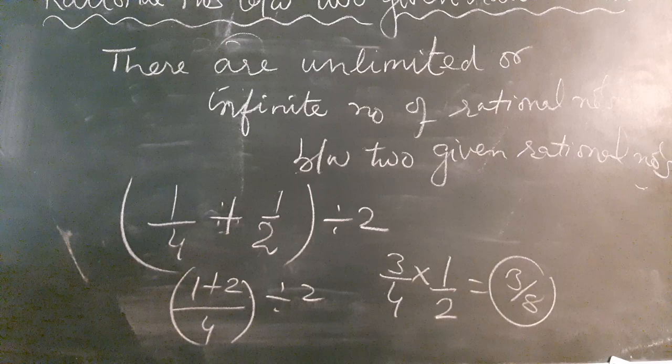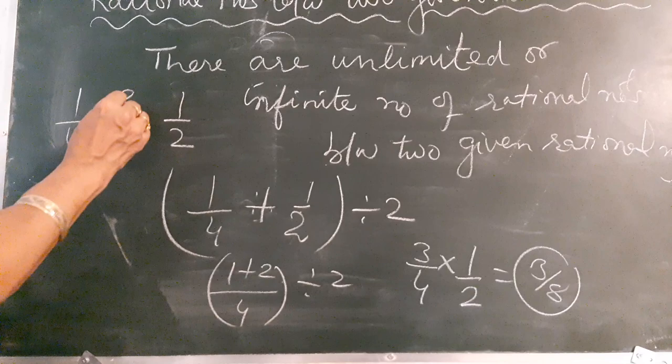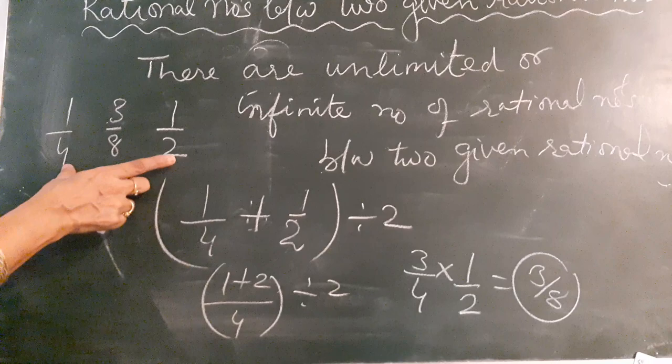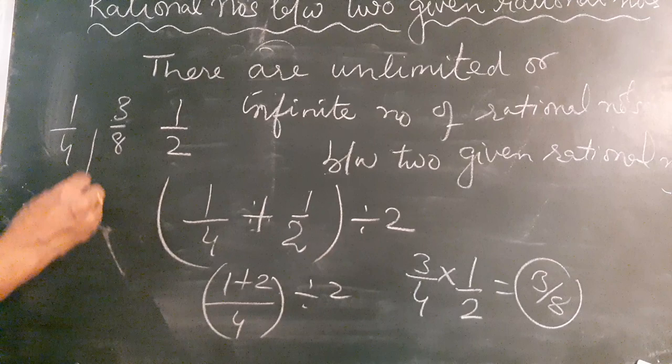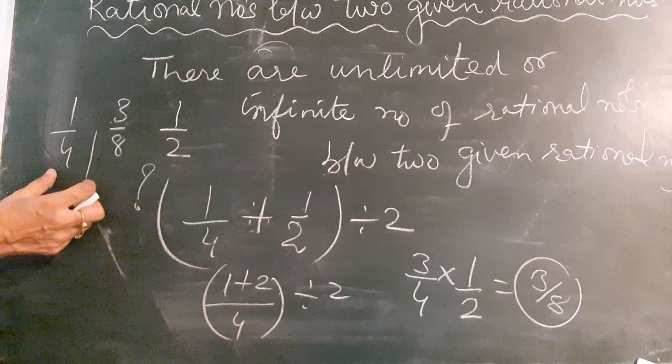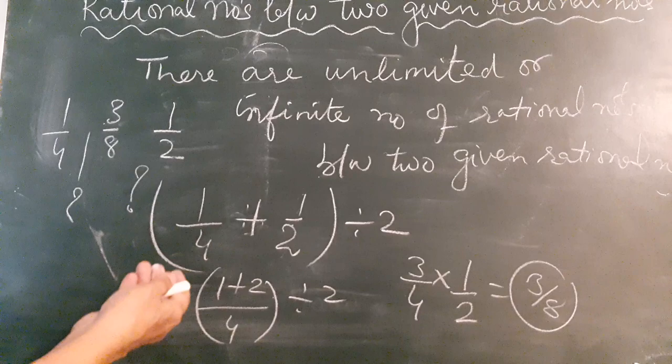Now, between 1/4 and 1/2, the number 3/8 comes in the middle. If you need to find two more rational numbers between 1/4 and 1/2, take the average of 1/4 and 3/8 to get one more number, and the average of 3/8 and 1/2 to get another. This way you can keep going and get as many numbers as you require.